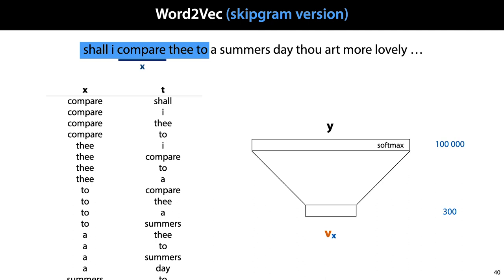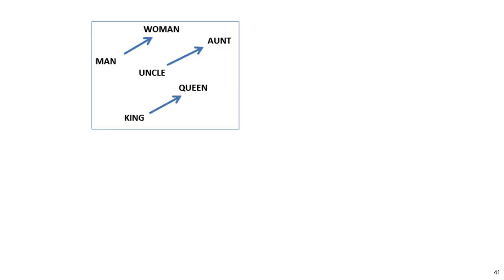If we train embedding vectors like this on a large corpus, and investigate what they look like after training, we can tease out some interesting properties. For instance, it seems like there is a direction in the resulting embedding space that, if we move along this direction, pushes male words towards their female counterparts.